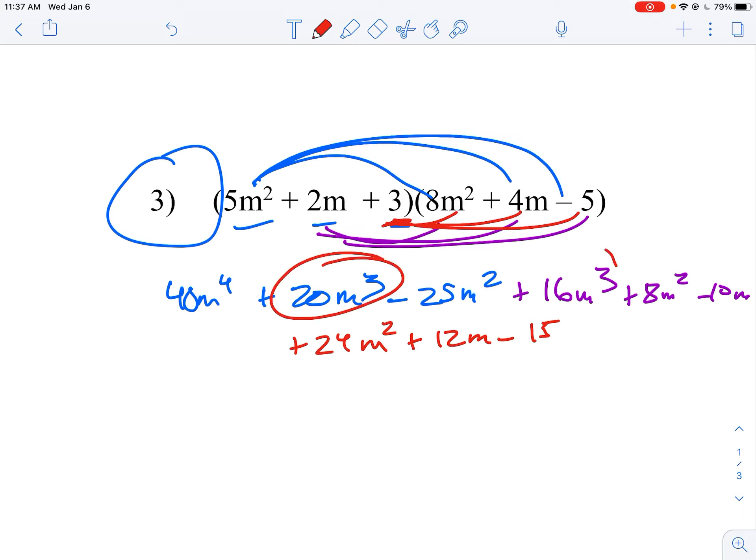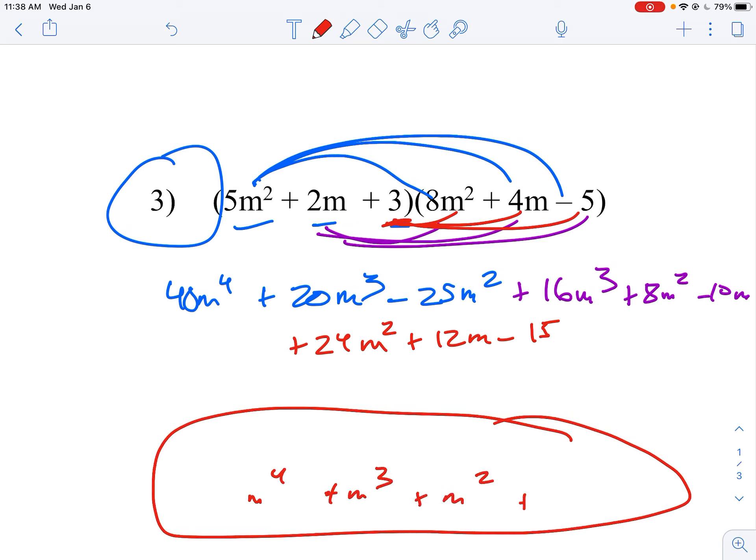You're going to combine like terms. So things with m³ combine together, things with m² add together. Not times together, they add together. They combine. So combine like terms and you'll have a set here that has m⁴, m³, m² plus m.